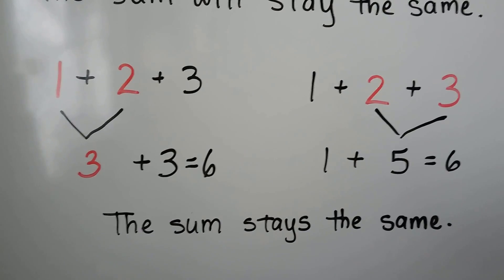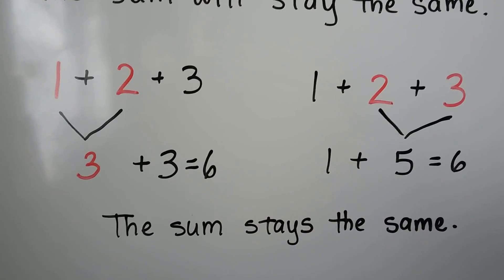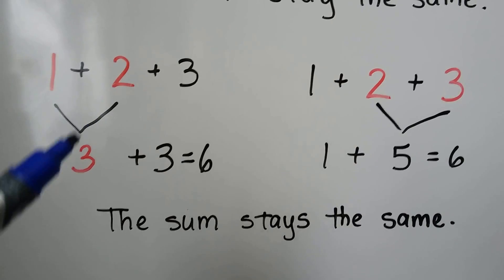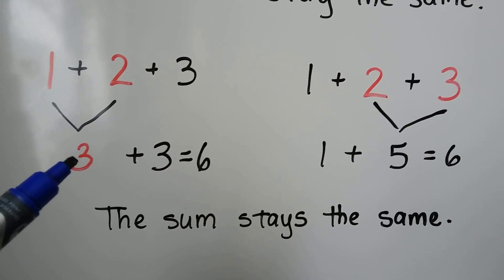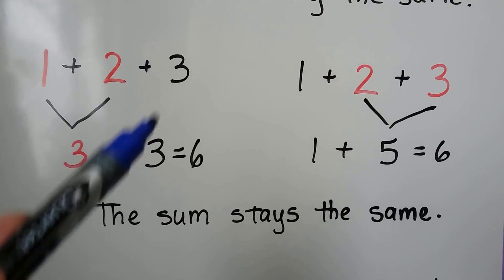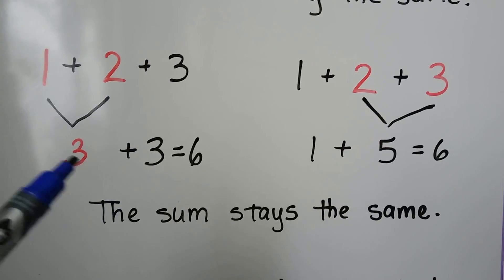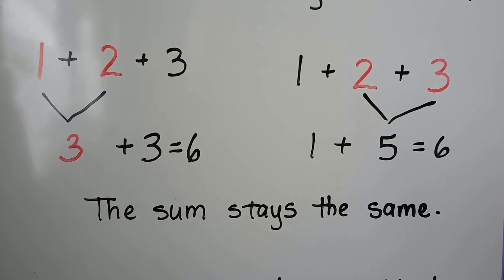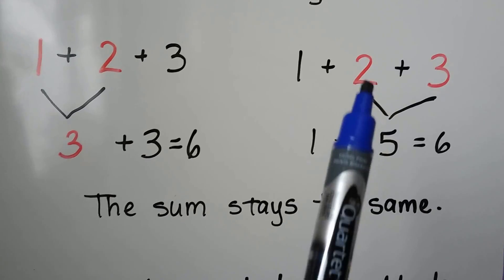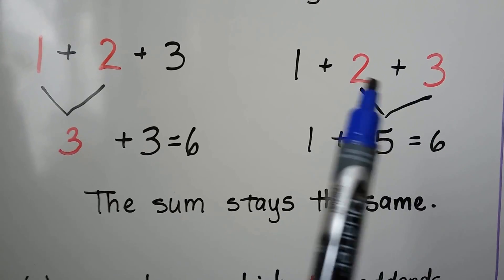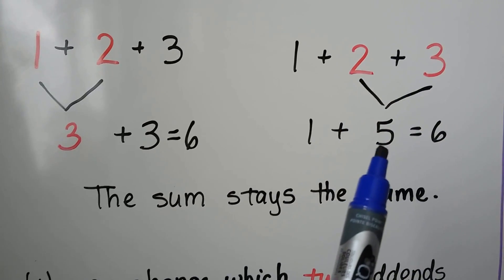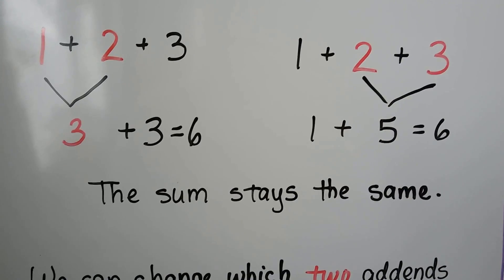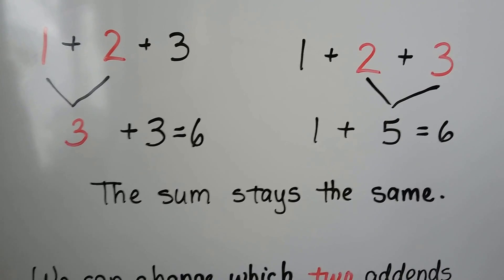If we add 1 plus 2 plus 3, we can add the 1 plus 2 first. That equals 3. Then we can add that 3 — that's doubles, isn't it? It equals 6. We can also add the 2 plus 3 first. That makes a 5. Then we can add the 1. That makes a 6. The sum stays the same.